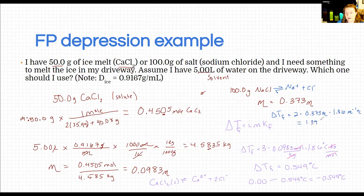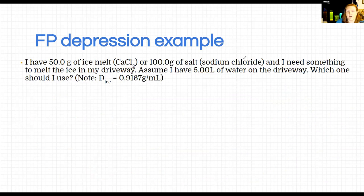And of course, the actual freezing point is negative 1.39. In this case, we have quite a lot of salt, and even though it has fewer ions in solution, the amount is still higher, so we end up with a lower freezing point. So that's how you're going to do that.